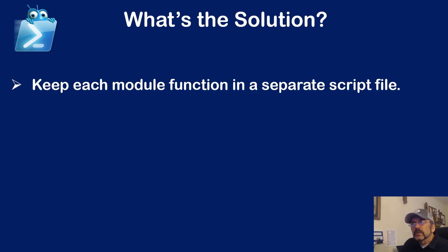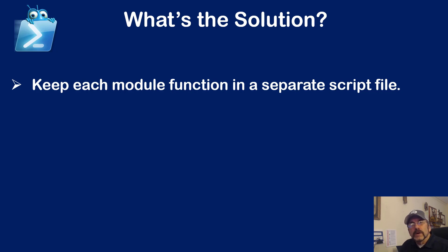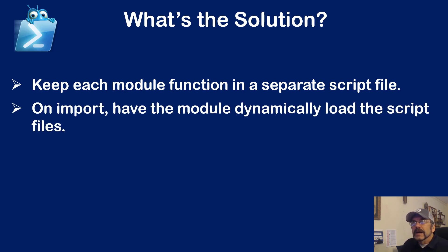So what's the solution? We want to keep each module function in a separate script file. If we can do that, then I could have one that sends email and somebody says, could you add logging so that when somebody sends an email you write it to a log file — and I just add that feature into that function, check that one function in, deploy it, test it. It's all isolated. On the import, I need to make sure the module goes and loops around and loads all the functions that are in separate files. I don't want to clobber them together; I want them kept separate.